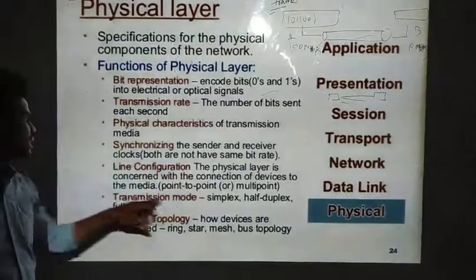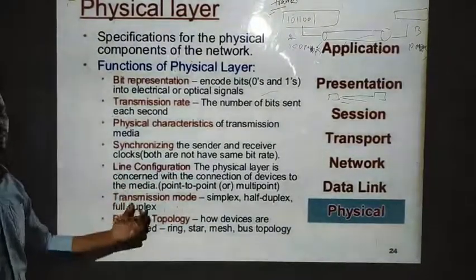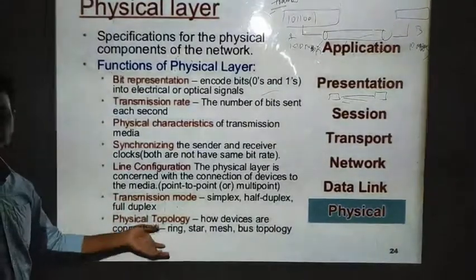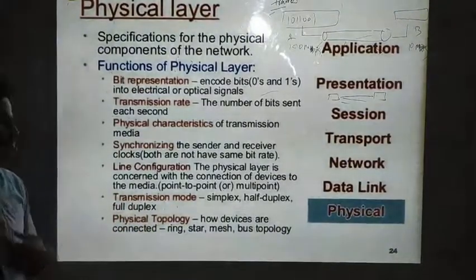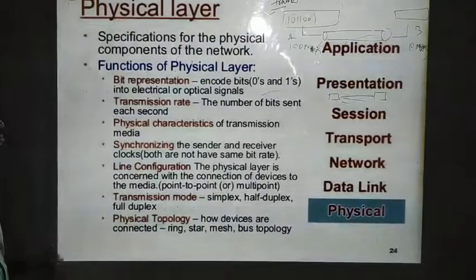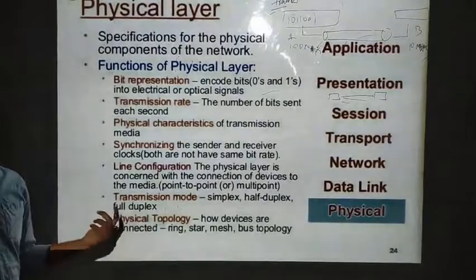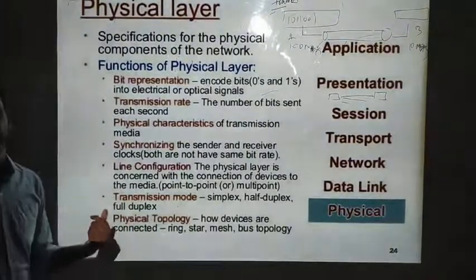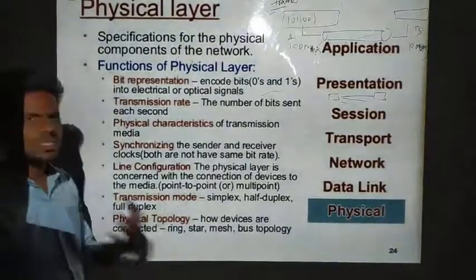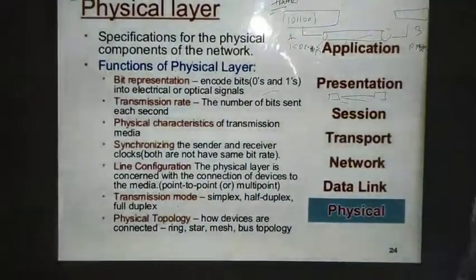The physical layer is concerned with the connection of devices — whether we have a dedicated path or multiple paths from the system. The transmission mode is also fixed by the physical layer, determining how data will be transmitted and what kind of transmission mode will be used.